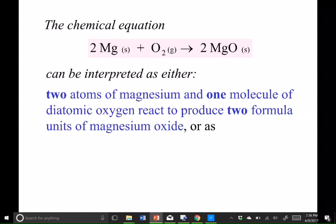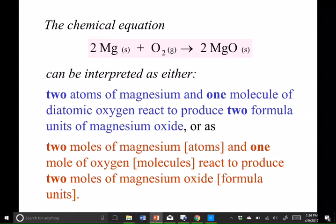And consider them moles, so this is to say that we could have two moles of magnesium atoms, two moles of magnesium atoms combined with one mole of O2 molecules, to form two moles of magnesium oxide formula units. Now, remember what a mole is, a mole is 6.022 times 10 to the 23rd.